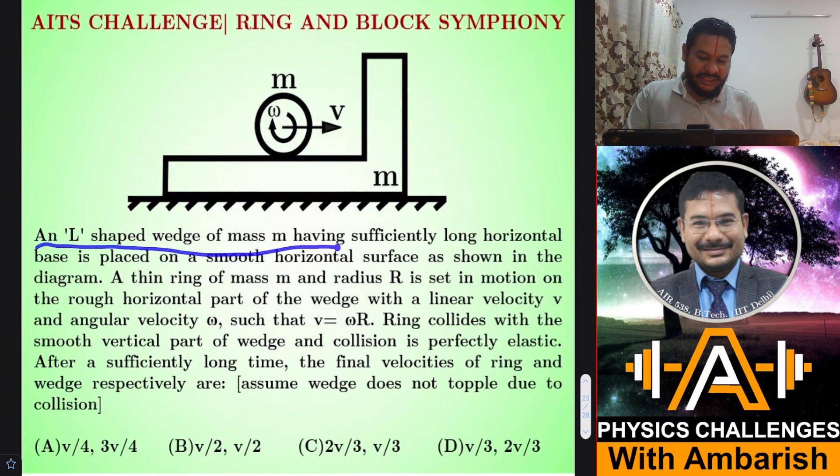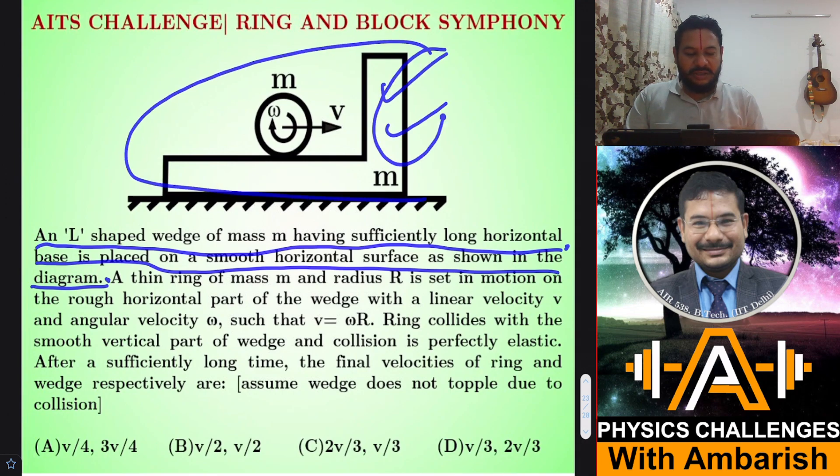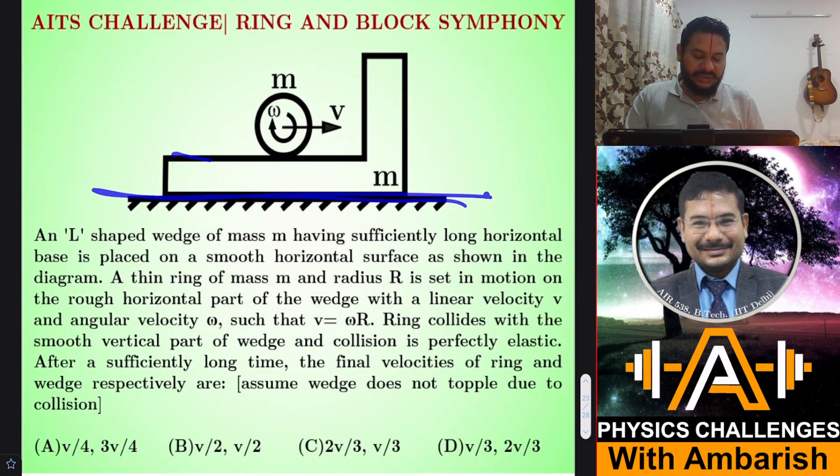Here's the problem: An L-shaped wedge of mass m having sufficiently long horizontal base is placed on a smooth horizontal surface as shown in the diagram. This is the L-shaped block placed on smooth horizontal surface. This surface is smooth but this surface is rough, and there's a ring over here.